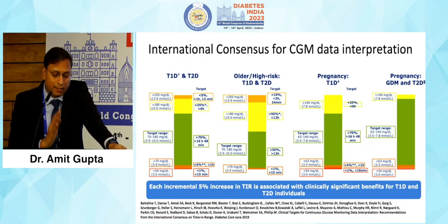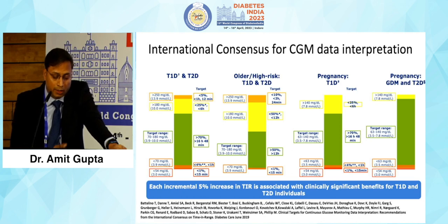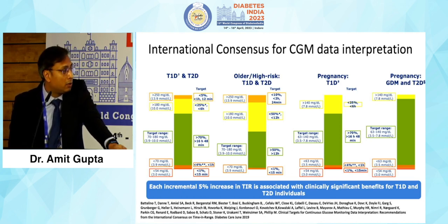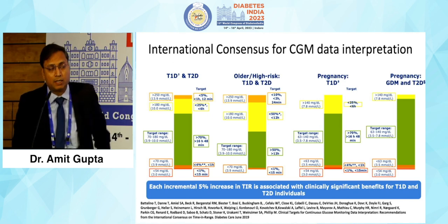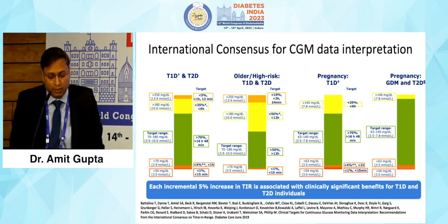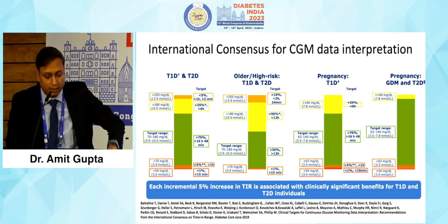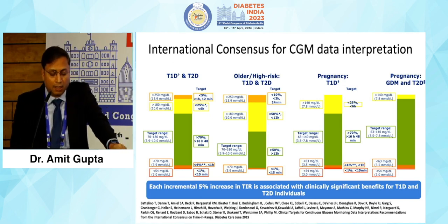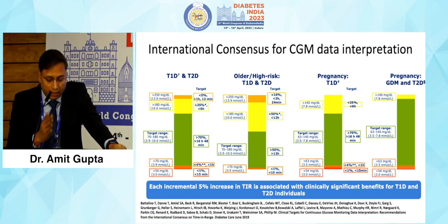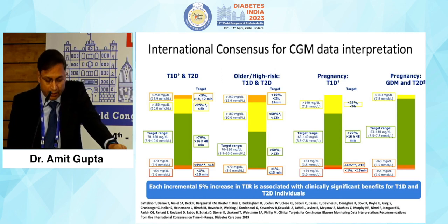The international consensus on CGM data interpretation guides the use of CGM in people with type 2 diabetes as well as type 1 diabetes, with different guidelines and different Time in Range (TIR) targets for different categories.